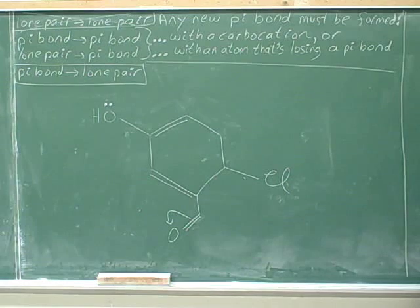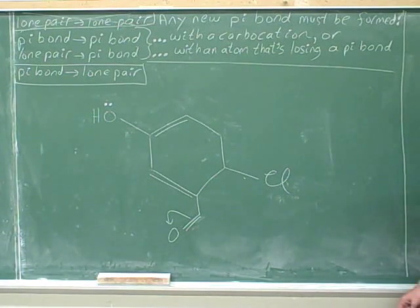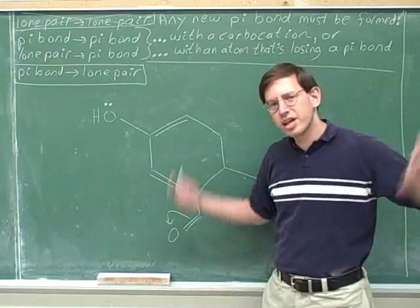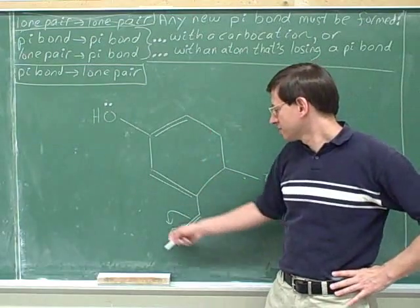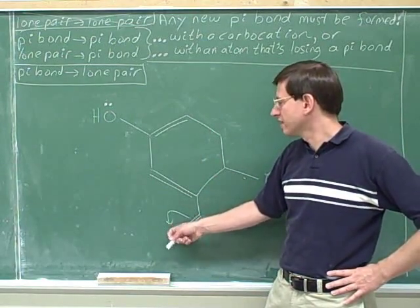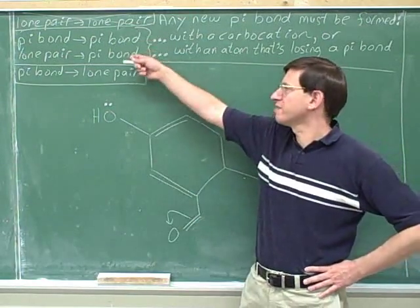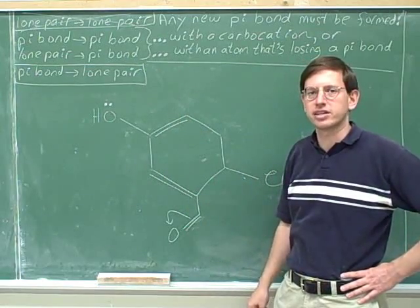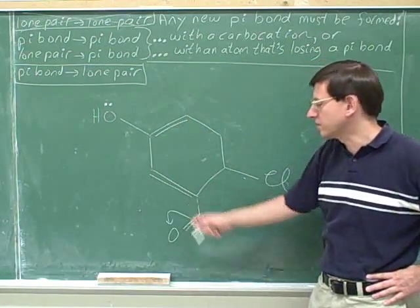Is this a legal arrow? Well, we're forming a lone pair — that's always fine. It's only when we form a pi bond that we have to worry about exceeding an octet. So forming a lone pair is fine.